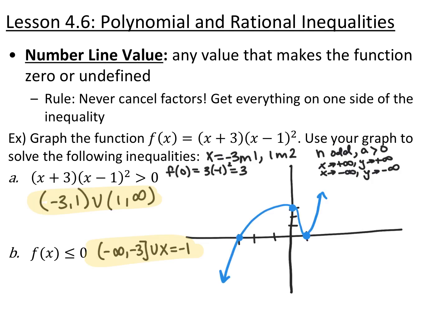I have my graph here. I have zeros of negative 3 and positive 1. Negative 3 is a multiplicity of 1, so it crosses. Positive 1 has a multiplicity of 2, so it touches. I have a 3rd degree polynomial and a leading coefficient of 1, so as x goes to positive infinity, y goes to positive infinity, and as x goes to negative infinity, y goes to negative infinity. My y-intercept is 3, so it crosses there, goes through that y-intercept, bounces off, and heads off to positive infinity.